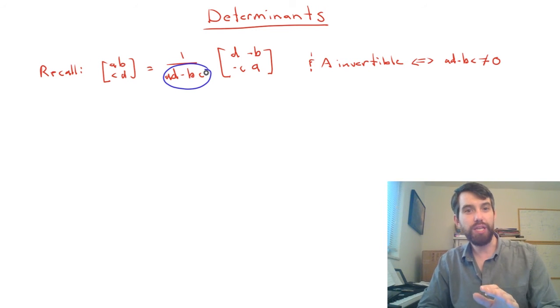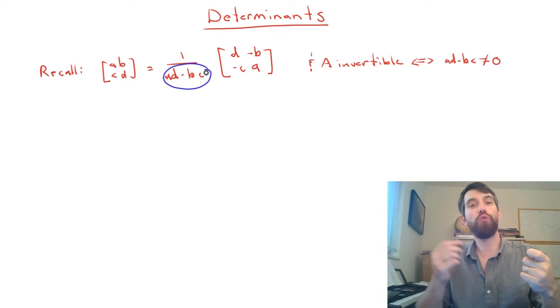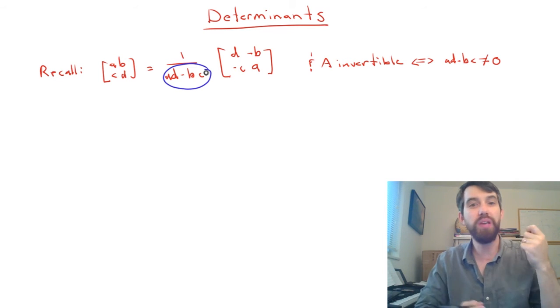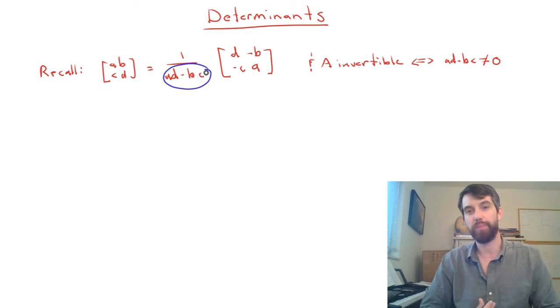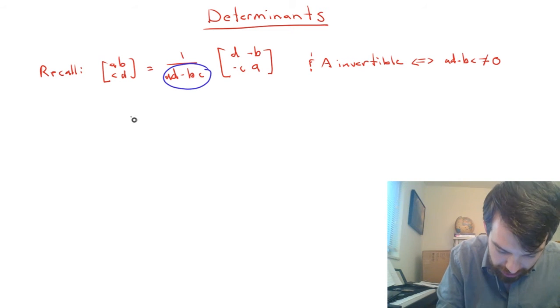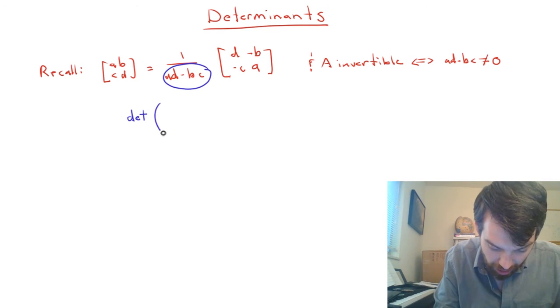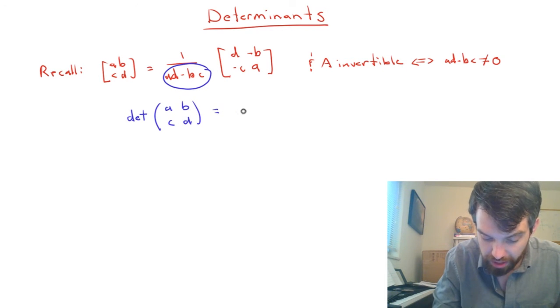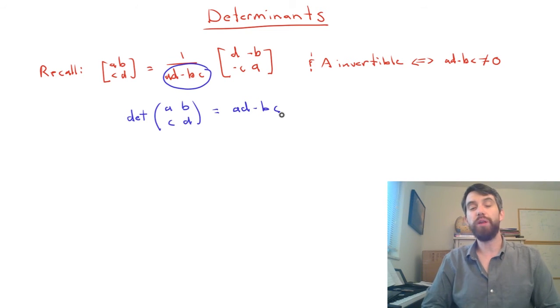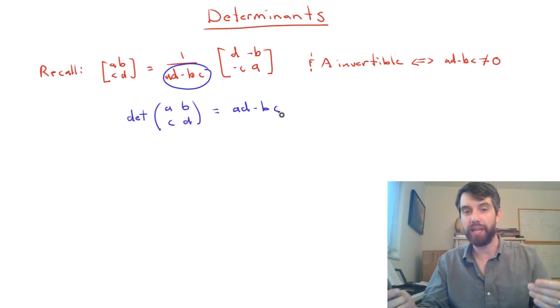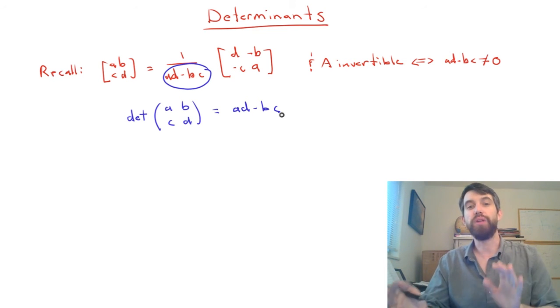So what's nice about this is that you have a quick condition that is equivalent to invertibility. It is going to be invertible precisely if this thing on the bottom here is non-zero. I had mentioned quickly at the time that that thing was referred to as the determinant. The determinant of the 2x2 generic matrix ABCD is going to be equal to AD minus BC. And then our condition could be rewritten as A is invertible if and only if the determinant of A is non-zero.